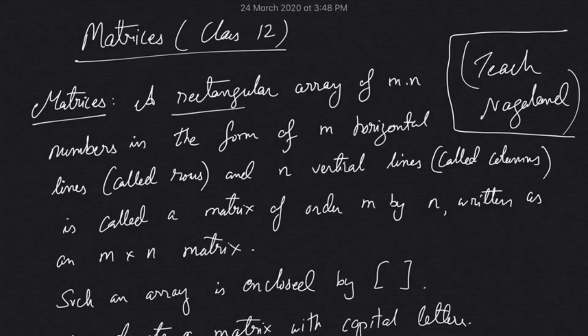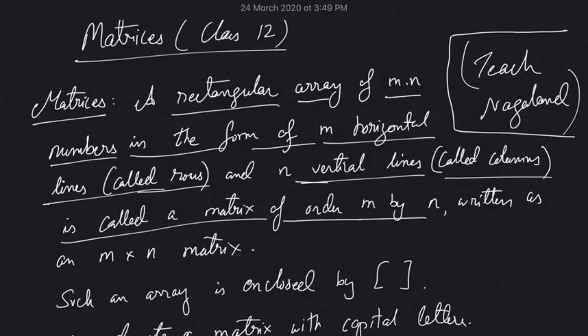MN numbers in the form of M horizontal lines called rows and N vertical lines called columns. This is called a matrix of order M by N, written as an M by N matrix.